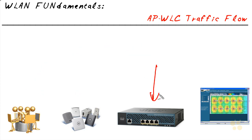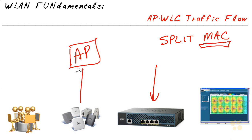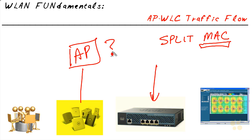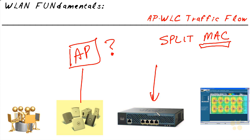When we bring in a wireless controller, a lot of the rules change. We're going to use something called Split Mac. The controller says to the access point: work with me as a dynamic duo and I'll take some of the heavy lifting off your shoulders. When people want to authenticate, you no longer have to make that decision — just forward the traffic to me and I'll make it. Things like moving packets and reformatting frames, I'll take care of that as well.